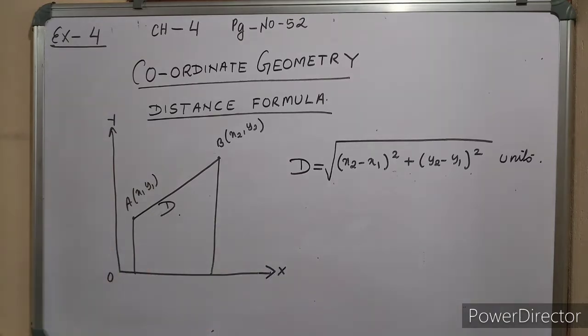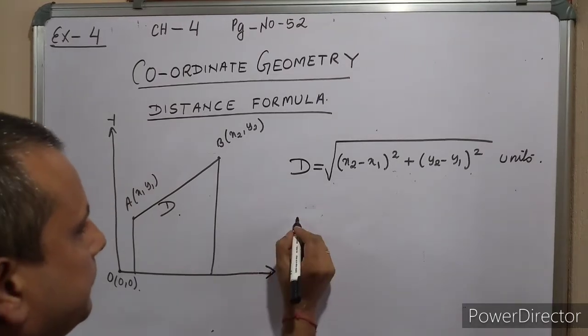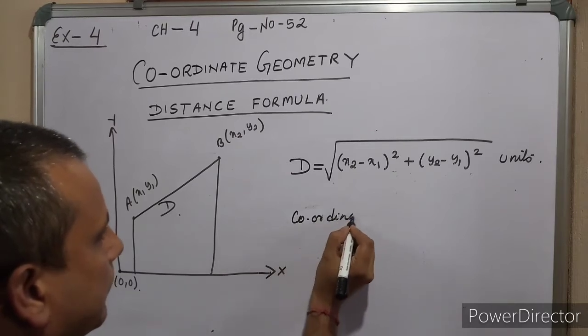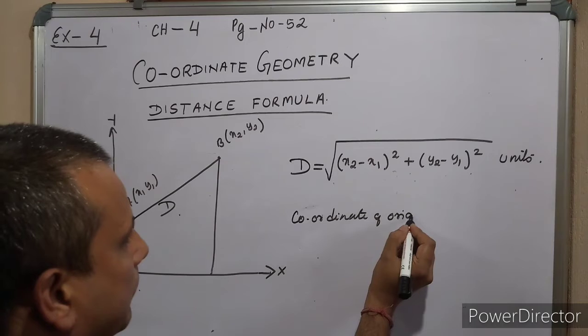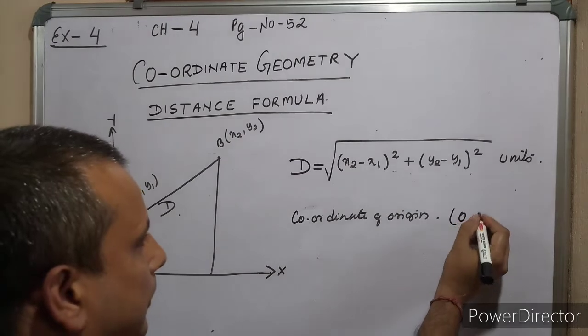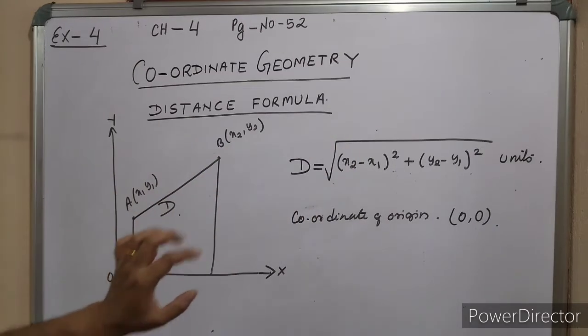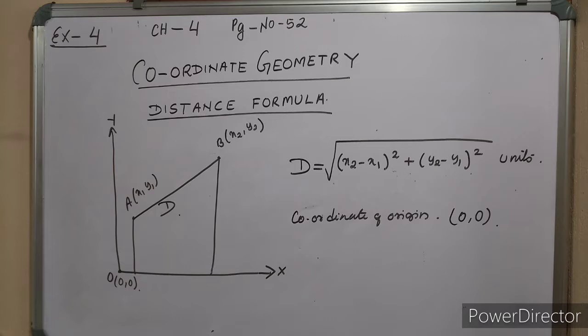This point is called the origin, the point of intersection of the x-axis and y-axis. The origin is (0, 0). You're going to use this formula to solve the exercises.